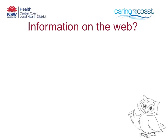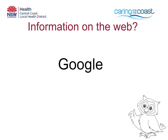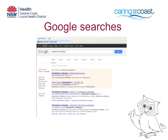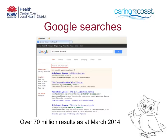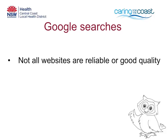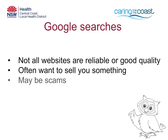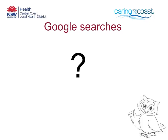Secondly, if you don't know the website you want, you can search using an internet search engine such as Google. Google is the most popular internet search engine, but basic Google searches can return thousands of results or more. For example, if you type the words Alzheimer Disease into Google, you will get over 70 million results, and not all of these will be reliable or good quality. Some will be trying to sell you things or may even be scams. So how do you avoid huge results, poor quality information or scammers?